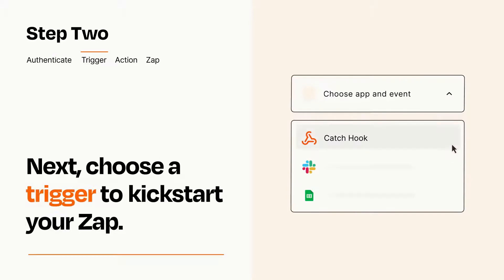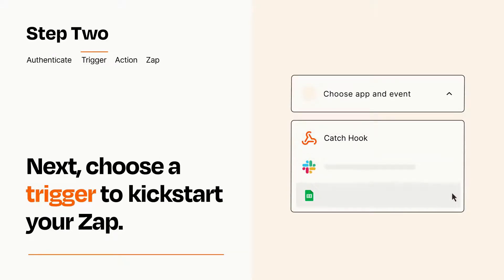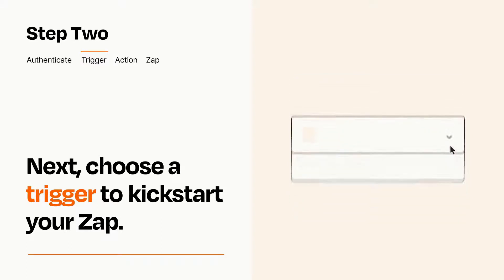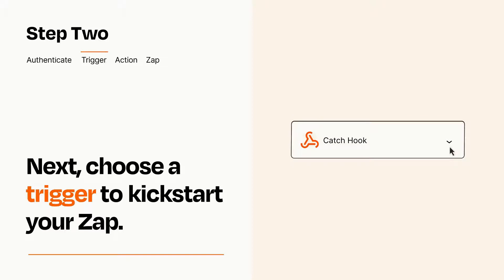Now let's set up your trigger, which is the event that starts your Zap. Pick the trigger event that you want from the list. When you set up this step, your Zap will pull in test data from your trigger app, that you'll see later when setting up your action app.